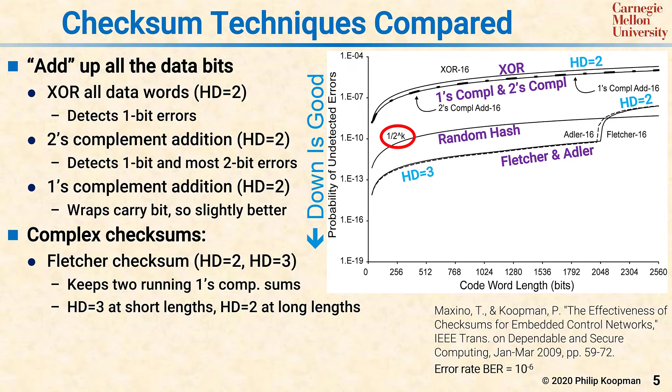Longer Fletcher checksums — for example, a 32-bit Fletcher checksum — have a similar property that gives you Hamming distance 3 at small values and then changes to Hamming distance 2. But even at Hamming distance 2, it does dramatically better than a simple addition because you get a more complex mixing. Therefore, it's much more difficult to find a 2-bit error that just happens to get past all those complicated addition functions to result in an undetected error.